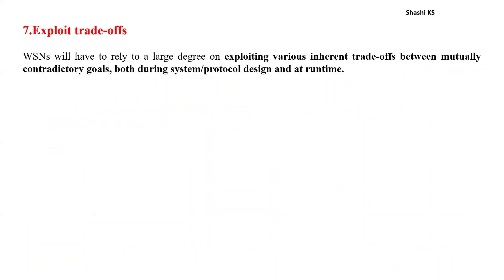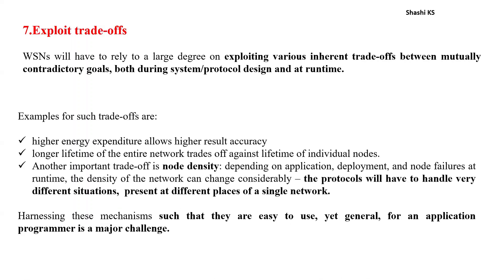The next mechanism is exploiting trade-offs. Wireless sensor networks must exploit various trade-offs between mutually contradictory goals during protocol design and at runtime. Examples include: high energy expenditure allows high result accuracy; trade-offs between longer lifetime of the entire network versus individual nodes; and node density — which varies during runtime due to application, deployment, and node failures — requiring protocols to handle different densities at different parts of a single network.